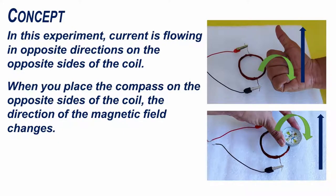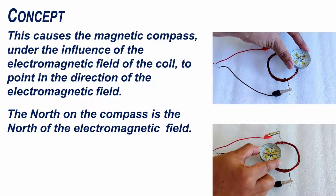In this experiment, current is flowing in opposite directions on the opposite sides of the coil. When you place the compass on the opposite sides of the coil, the direction of the magnetic field changes. This causes the magnetic compass under the influence of the electromagnetic field of the coil to point in the direction of the electromagnetic field. The north on the compass is the north of the electromagnetic field.